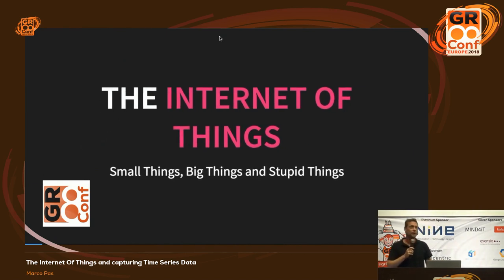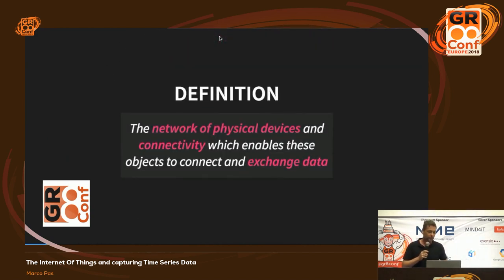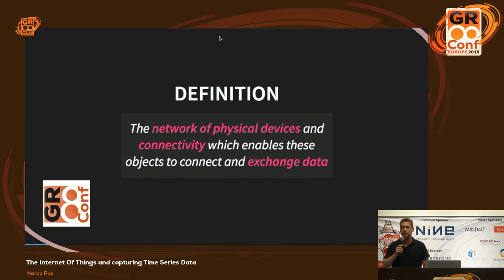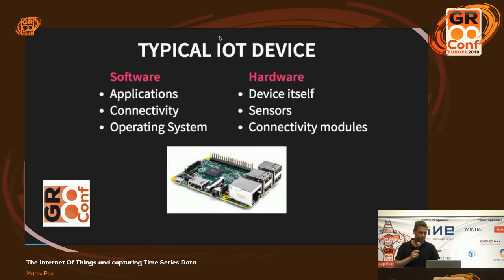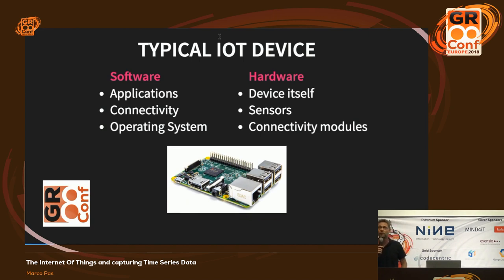Everybody's speaking about the Internet of Things - you have nice things, small things, but also very stupid things. Let's take a definition: what is an Internet of Things thingy? You can look on Wikipedia and find all kinds of different definitions. For me, it's just a device with a connection to a backend. At the end, it's a network of physical devices that exchange data with a backend.